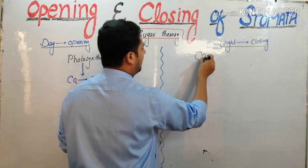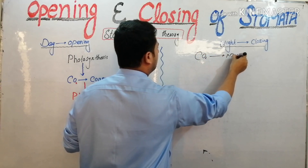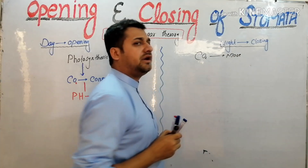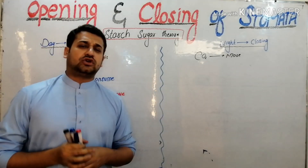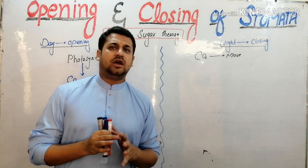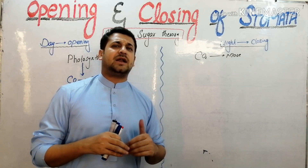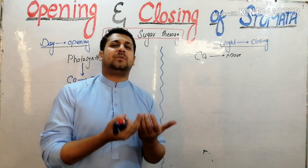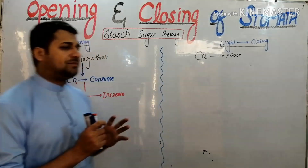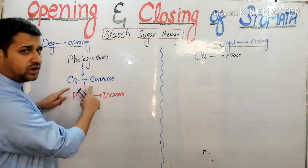At night, CO2 is more in quantity because photosynthesis is decreased, so carbon dioxide is not used. If you compare: during daytime, carbon dioxide is consumed, but at night it is not.